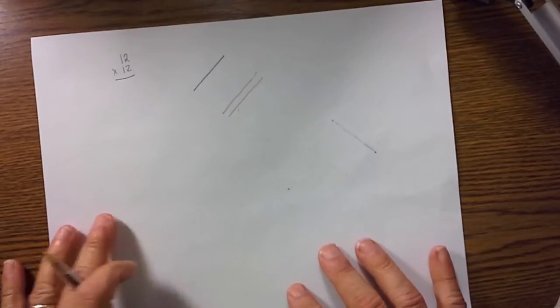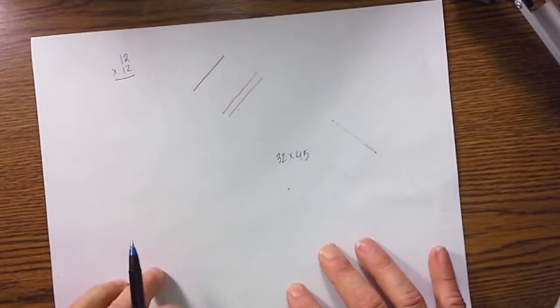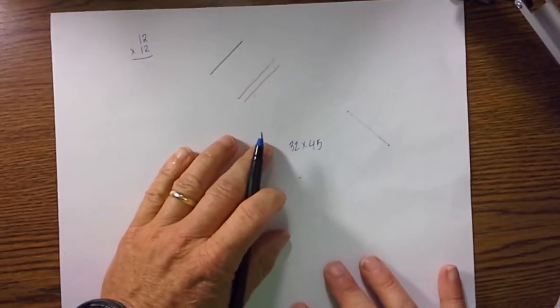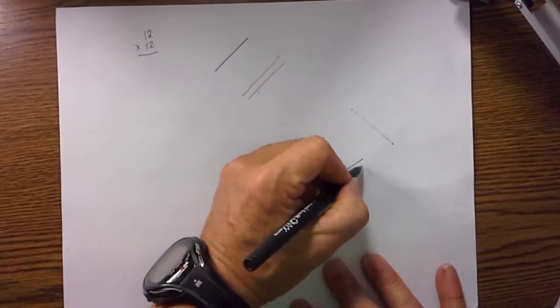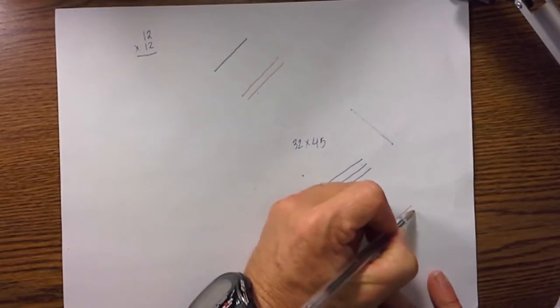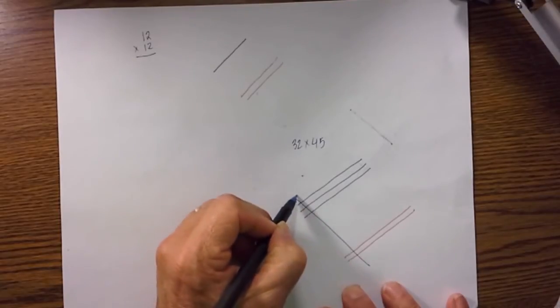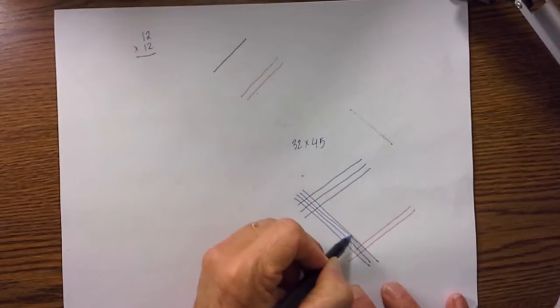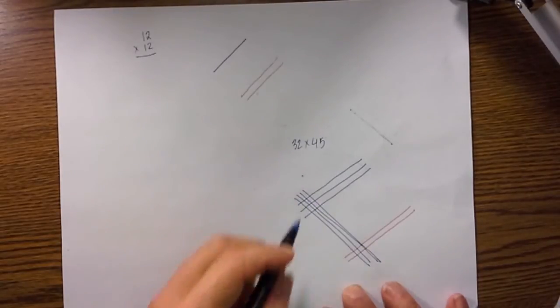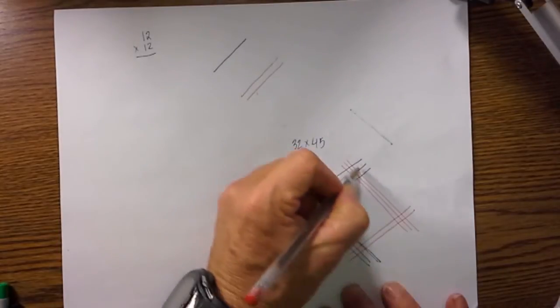Let's go with one a little bit more difficult and I'll point out maybe a little weakness of this whole technique. Let's go with 32 times 45 and you'll see one of the weaknesses in just a moment. So I start with one, two, three for the three, spread it out, one, two for the two. I then move over to a four, I've got one, two, three, four. Notice I've got nice 90 degree angles there.